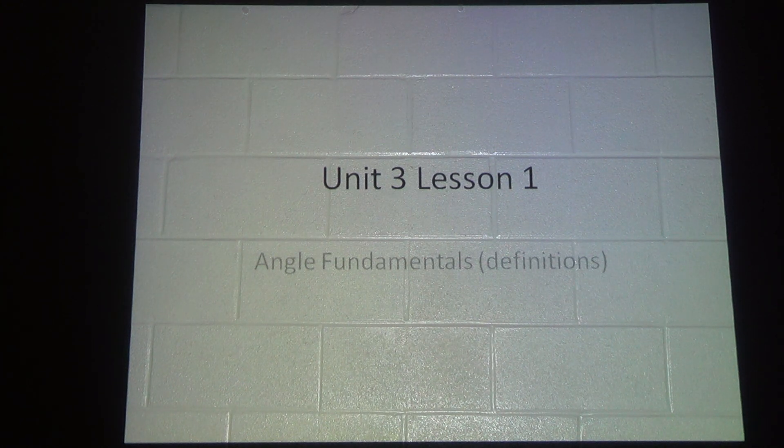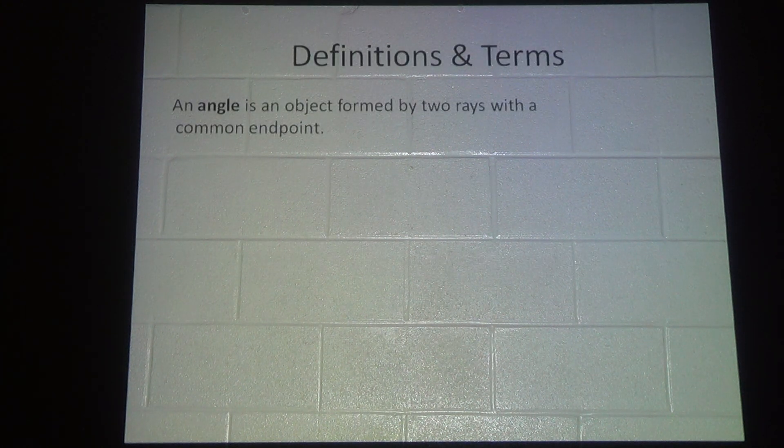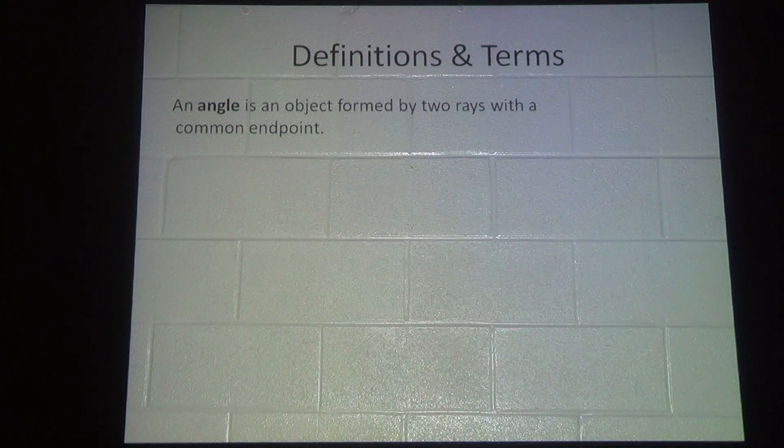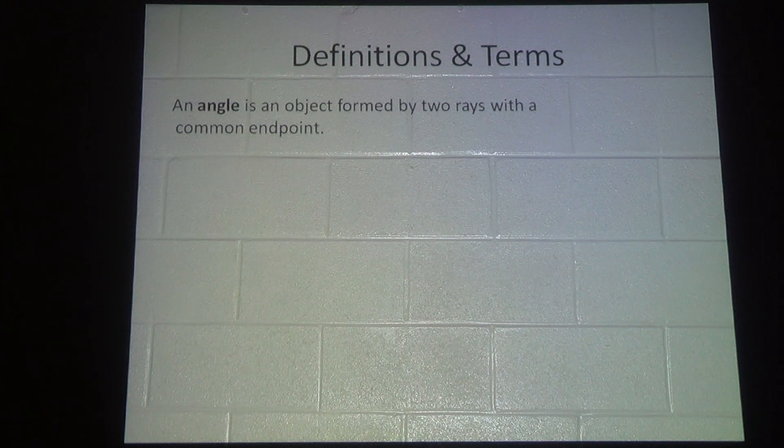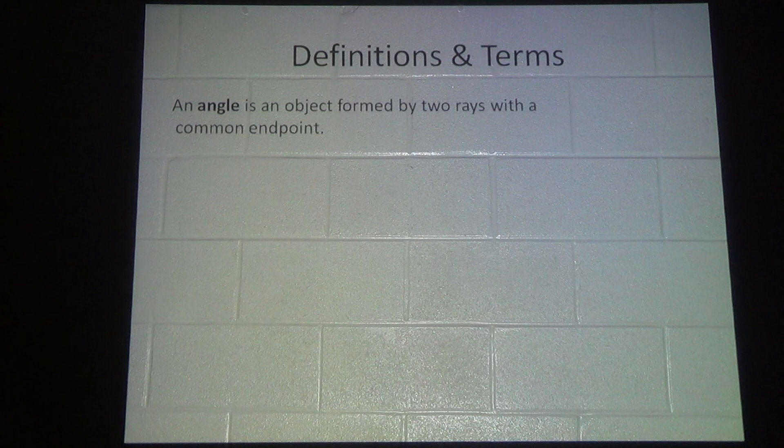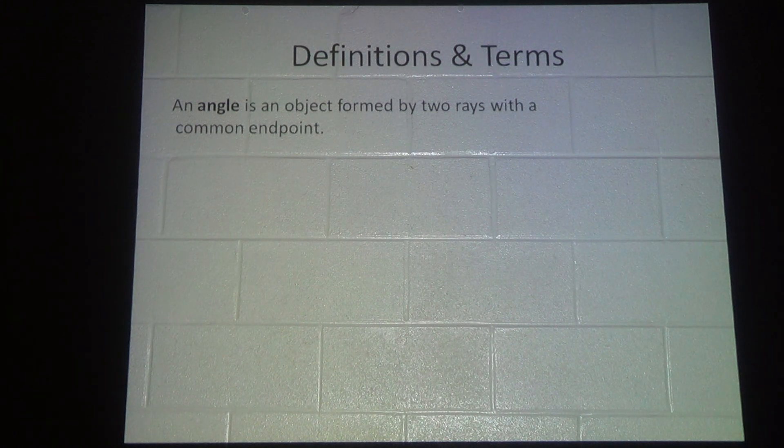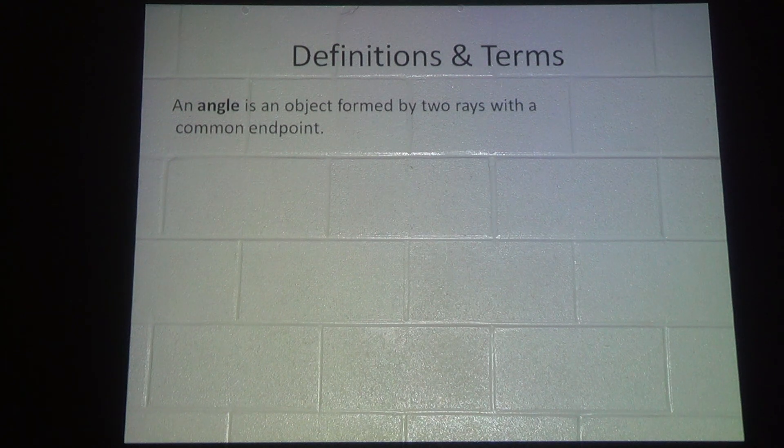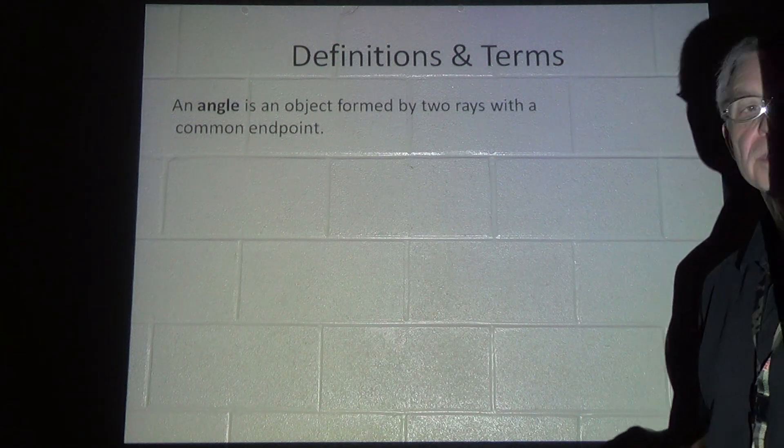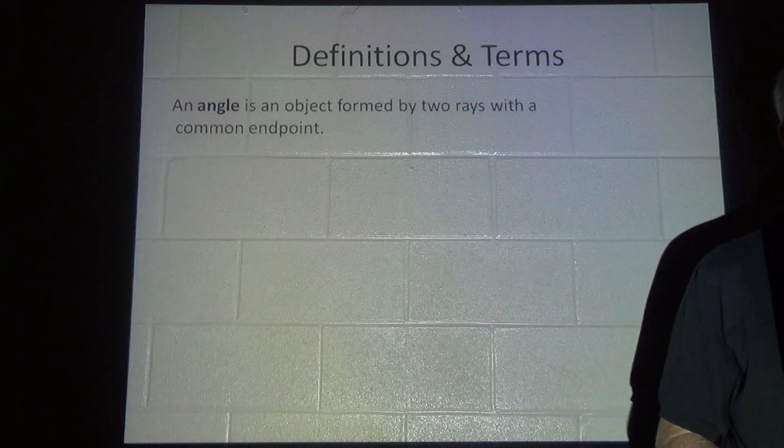For angle fundamentals, this is a lot of definitions. An angle is an object formed by two rays with a common endpoint. This means that you have two rays that are joined or actually start at the same point, and because they start at the same point, the distance between them becomes an angle as they move out.